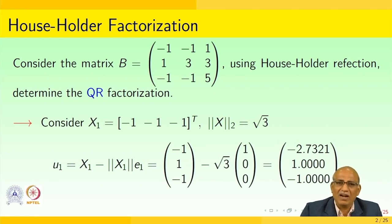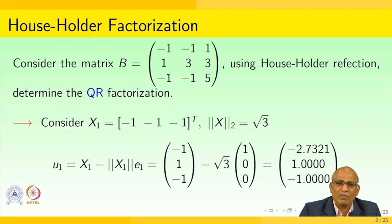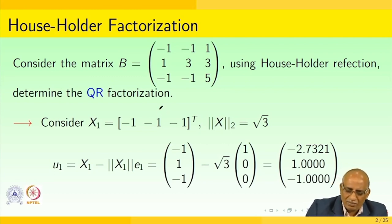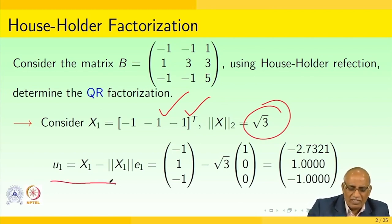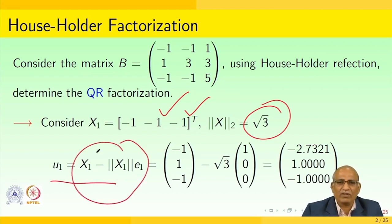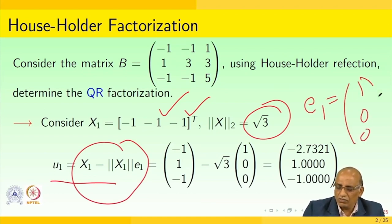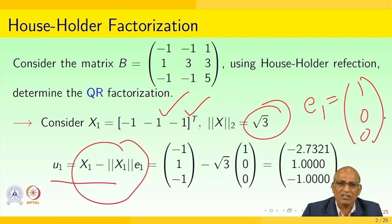Let us start by considering the matrix X1 = [-1, -1, -1] transpose. The 2-norm of X1 is the square root of (-1)² + (-1)² + (-1)², which turns out to be √3. So I write U1 = X1 − ‖X1‖·e1, where e1 = [1, 0, 0] transpose.